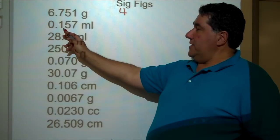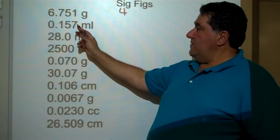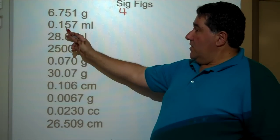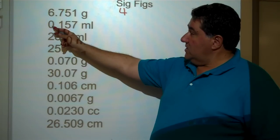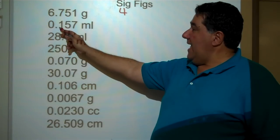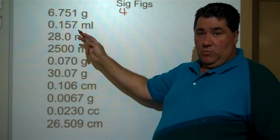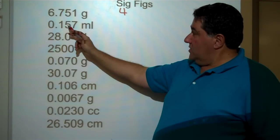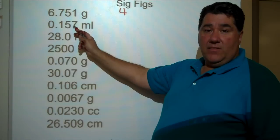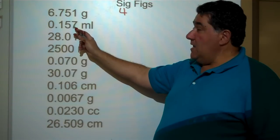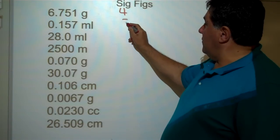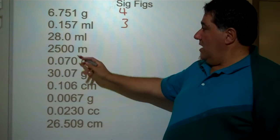The second number: 0.157 milliliters. There is a decimal point here and there is a zero, but it's not an ending zero after the decimal point. So we have one, two, three digits that are between one and nine. Rule number one applies again — there are three significant figures.